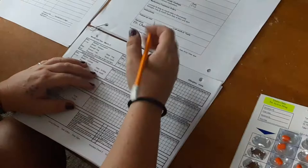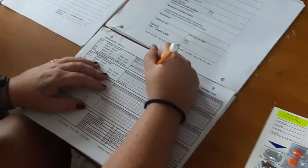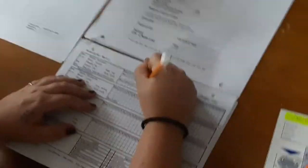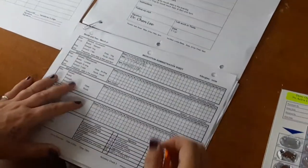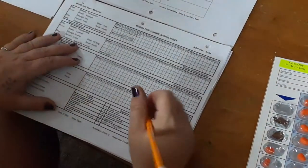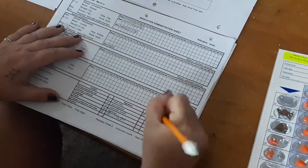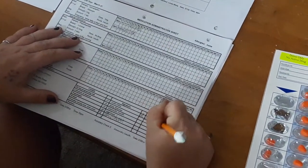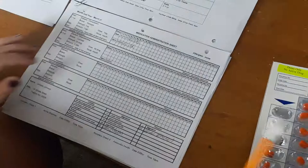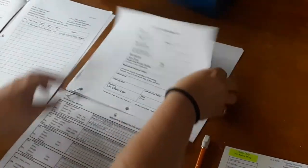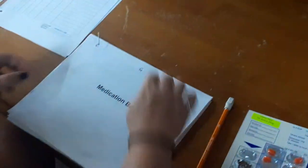Now I will initial that I have administered Tanisha's medication. And I will sign my initials on the bottom with my signature. And I'm done with the medication book. So I close that and put that aside.